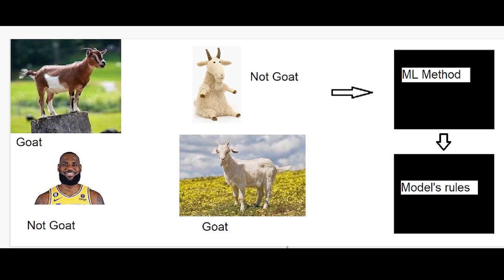So maybe it'll see: if it has horns, then it's a goat. But this one also has horns, so if it's surrounded by grass, then it's a goat. The model will just pick up on various different patterns like this in the data, and then it'll make its decision off that.